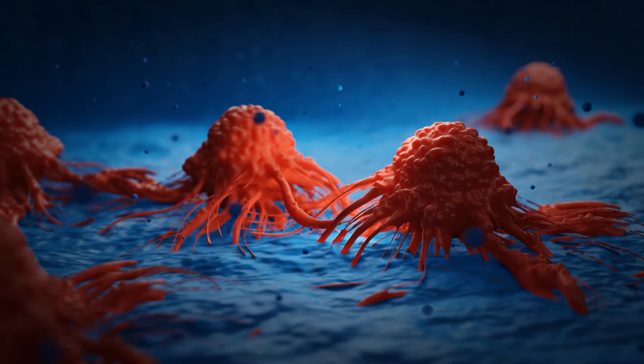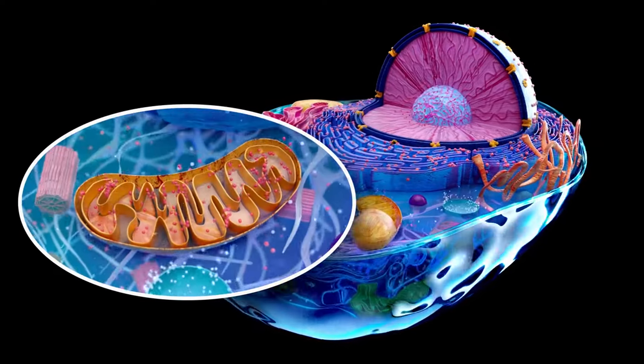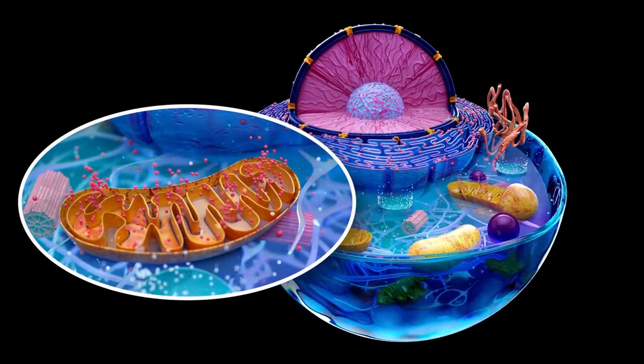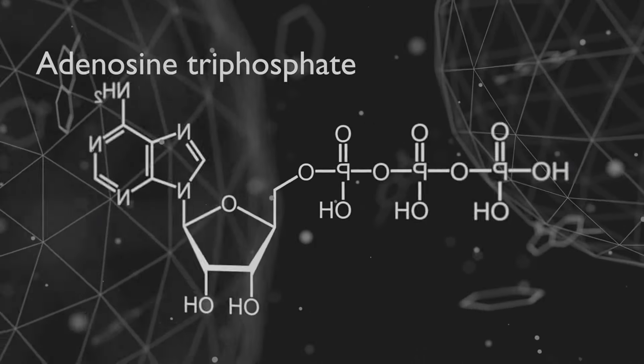Now let's discuss how this relates to cancer. In healthy cells, mitochondria produce energy through oxidative phosphorylation, a very efficient process that requires oxygen. This pathway generates high ATP by breaking down glucose and using oxygen.